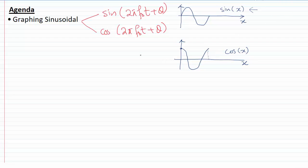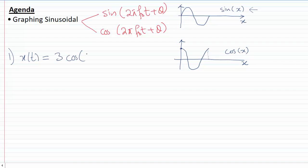Keeping this information in mind, we can plot sinusoidals. I'm going to explain this concept using examples. For the very first example, I have x(t) = 3cos(4πt). In many books, sinusoidals are usually done in terms of cosine only — it makes no difference as long as you know what you are doing.